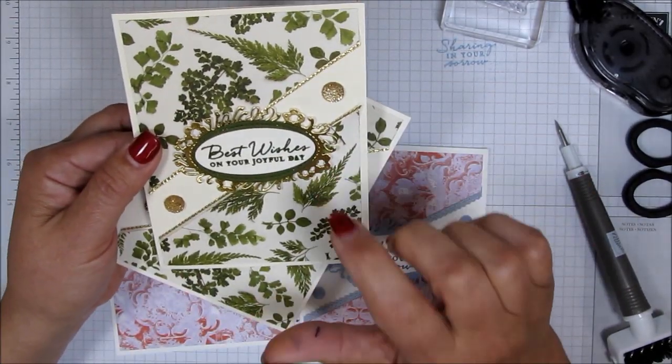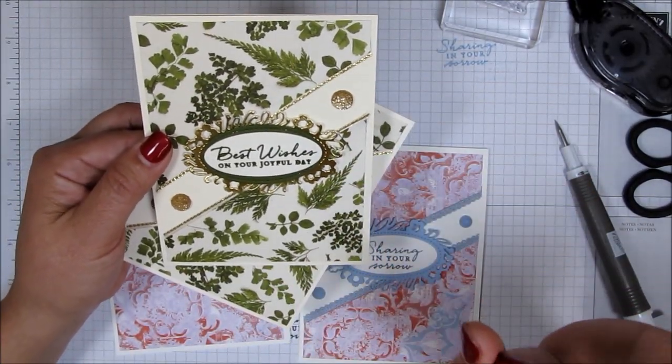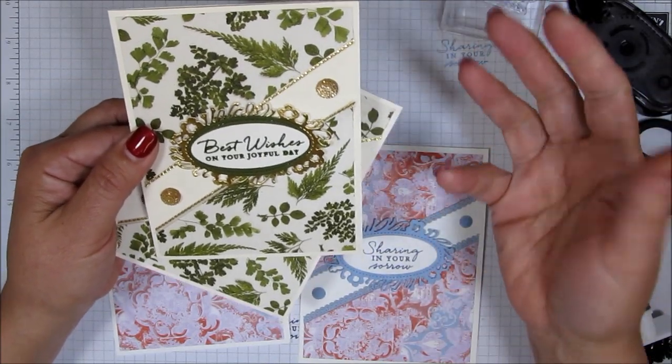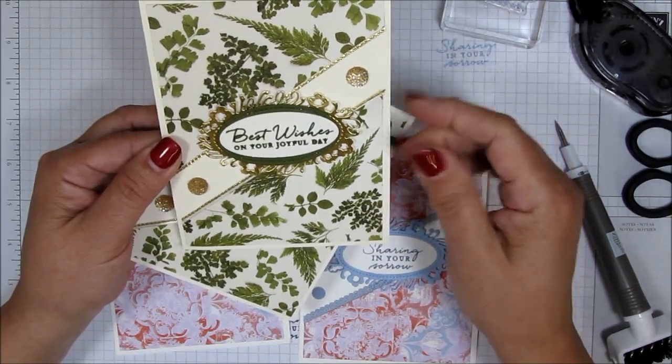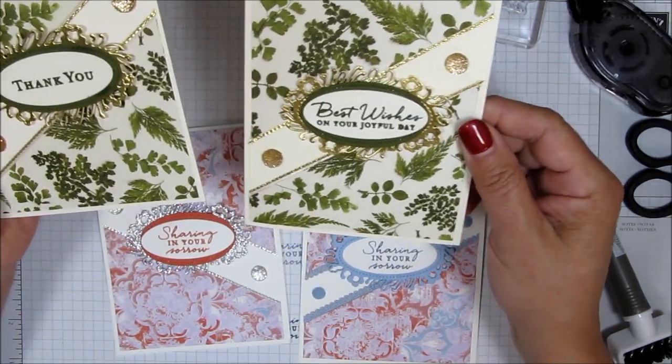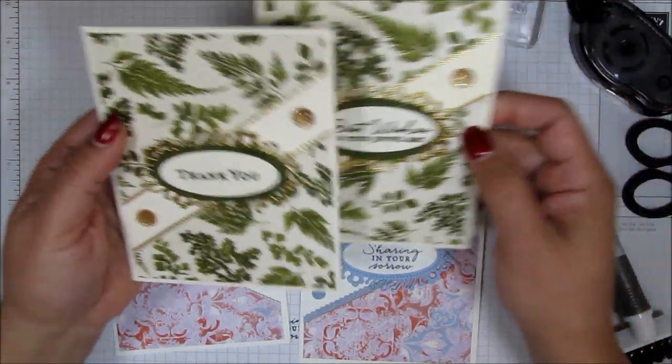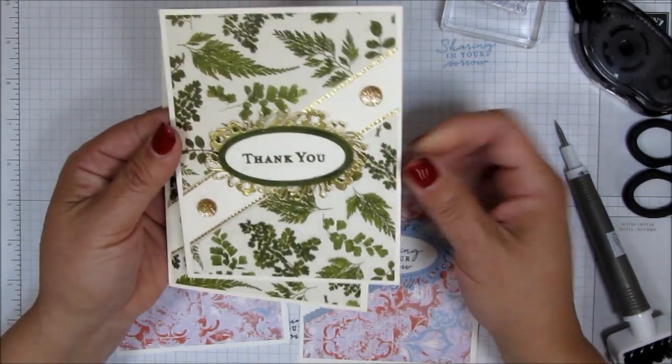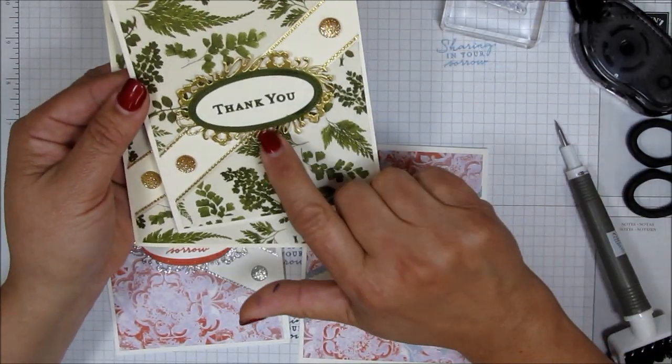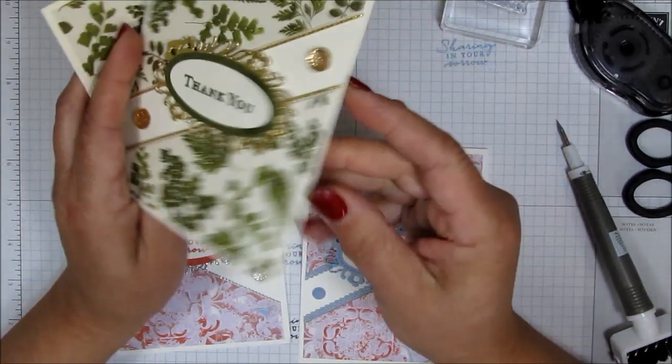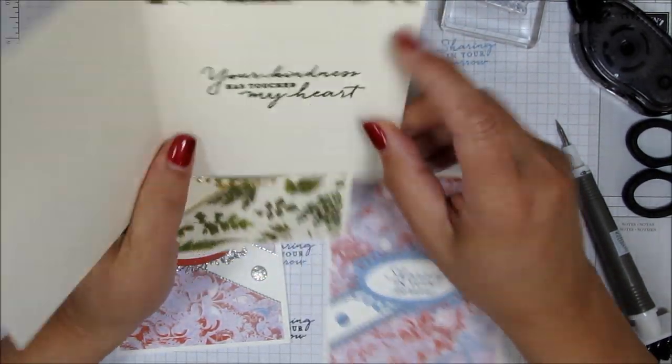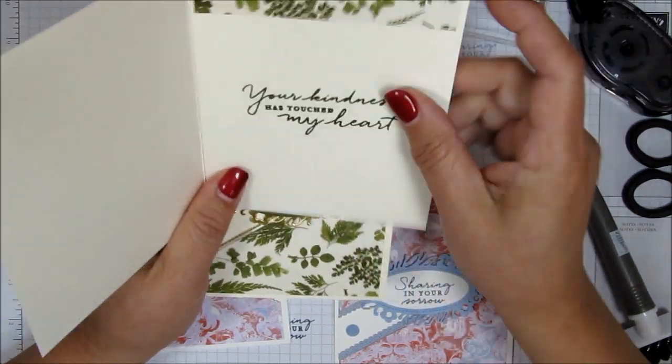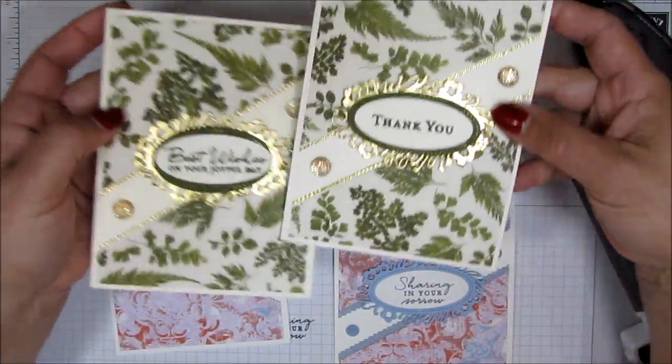And I used some gold foiled cardstock. I think it's, I don't know if they call it Designer Series paper, but it's gold cardstock. It's the foiled. And I'll list that in the description of this video down here. And here's a thank you card. And the inside says, Your Kindness Has Touched My Heart. And another little piece of that Verdant Garden Designer Series paper. Aren't these pretty?